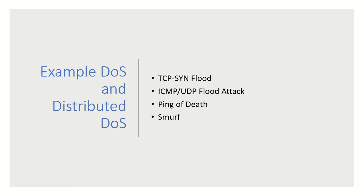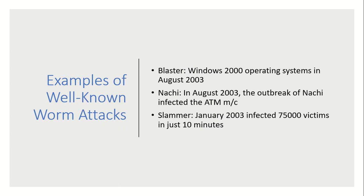Examples of DoS and distributed DoS attacks are TCP SYN flood, ICMP or UDP flood attacks, and ping of death or smurf attacks. Well-known worm attacks include Blaster, which appeared in 2003 on Windows 2000; Nachi, also in 2003; and Slammer in January 2003, which infected almost 75,000 victims in just 10 minutes.